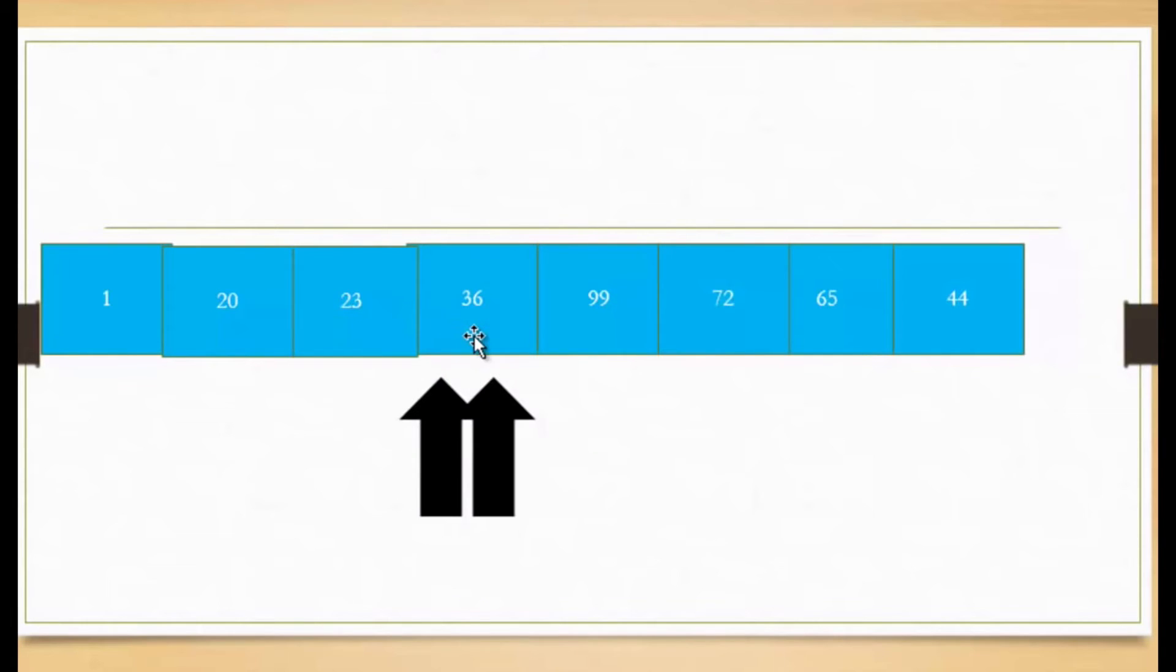So there you go. As you can see, relative to 36, everything to the right of 36 is greater than 36. And everything to the left of 36 is less than 36.